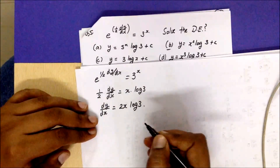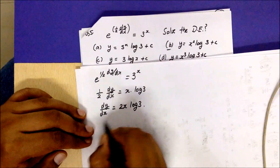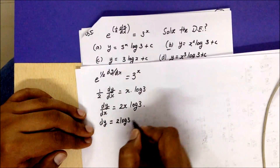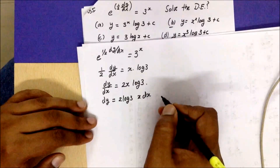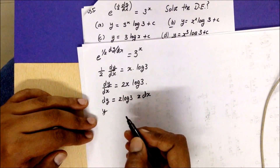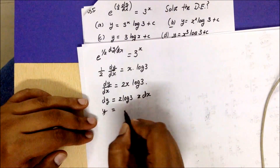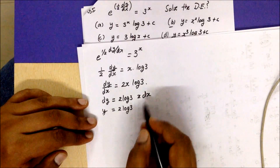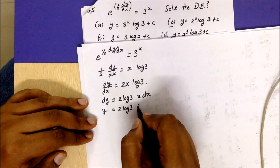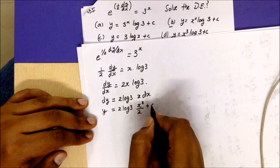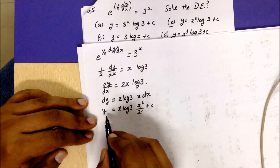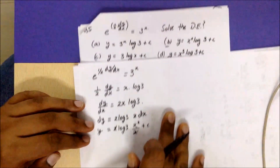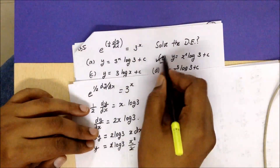Since 2·log3 is a constant, we can separate variables: dy = 2·log3·x dx. Integrating both sides: y = 2·log3·(x²/2) + c. The 2 cancels, so the answer is y = log3·x² + c. Checking the options, that's option B.